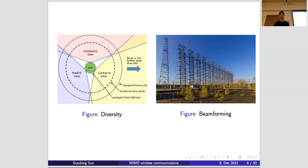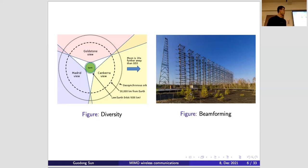Another example is beamforming from the former Soviet Union. This is a radar antenna array located in what is nowadays Ukraine. You can deploy a large number of antenna arrays to beamform — to send signals in specific directions. The beamforming gain can be very high. Several decades ago, people all around the world could feel the signals emitted from this antenna array.